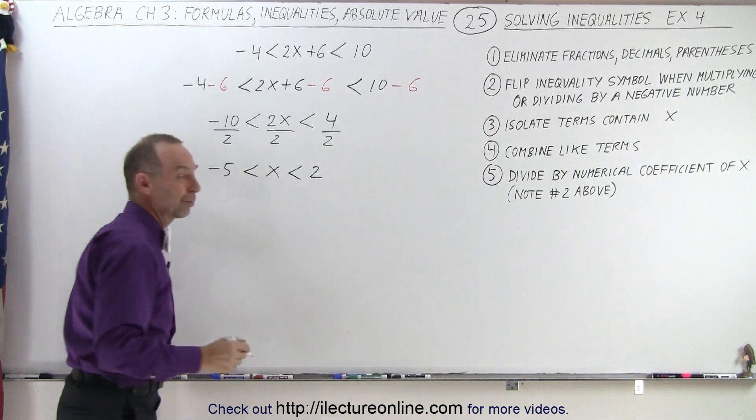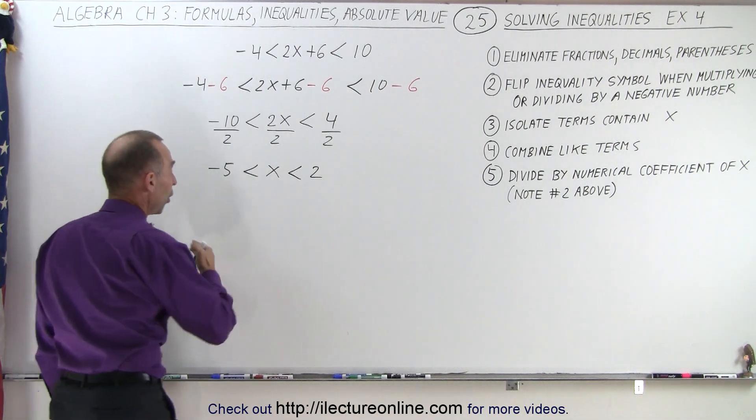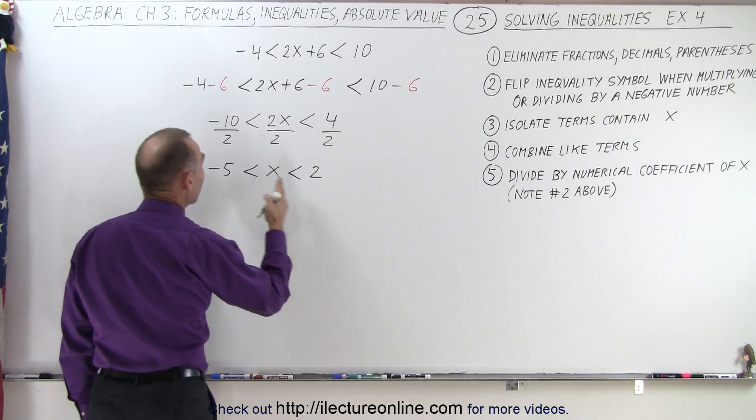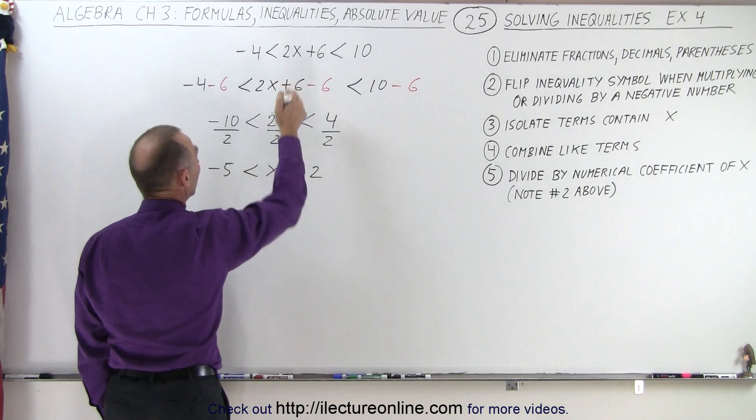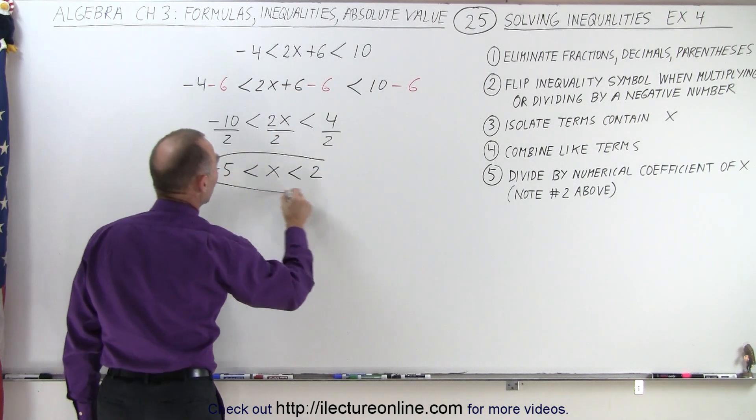Which means that's the solution. All the values between negative 5 and positive 2 satisfy the inequality, not including the endpoints.